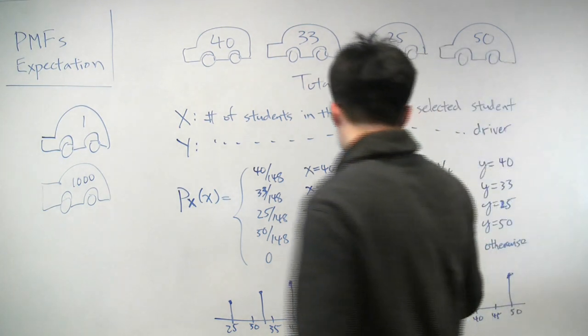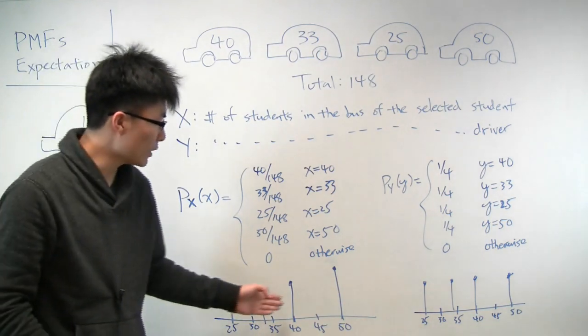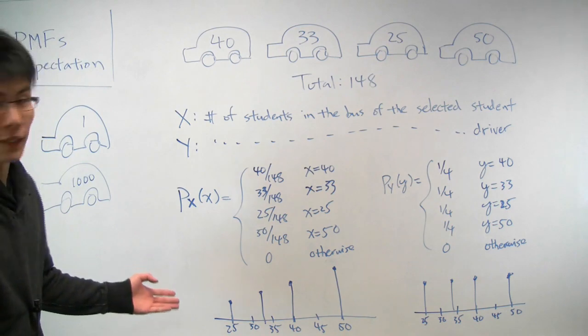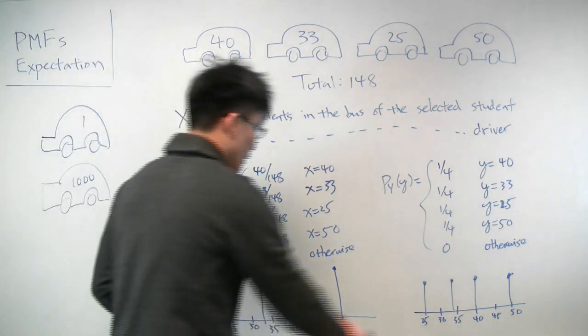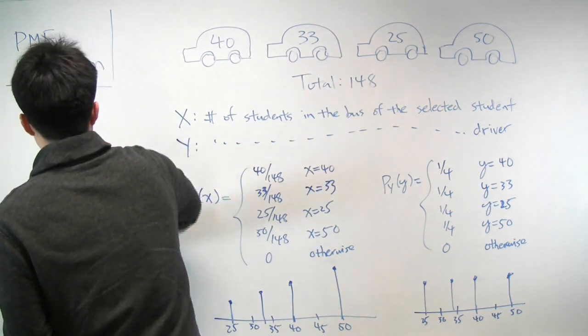the difference now is that all four of these masses will have the same height. Each one will have height 1/4. Whereas this one, for x, it's more heavily biased in favor of the larger ones. And so because of that, we can actually now calculate what the expectations are and figure out whether or not our intuition was correct.